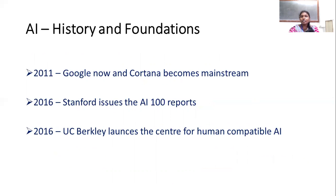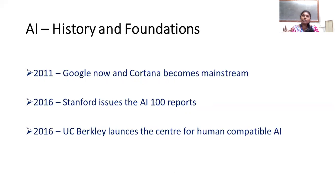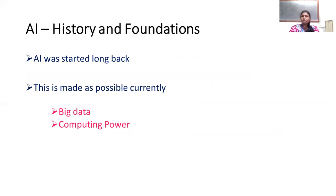Around 2011, Google Now became mainstream as an app. In 2016, Stanford University issued the AI 100 report covering 100 AI-based projects. UC Berkeley launched the Center for Human Compatible AI — studying how humans work, like laundry and cleaning, to develop generalized human-compatible AI.